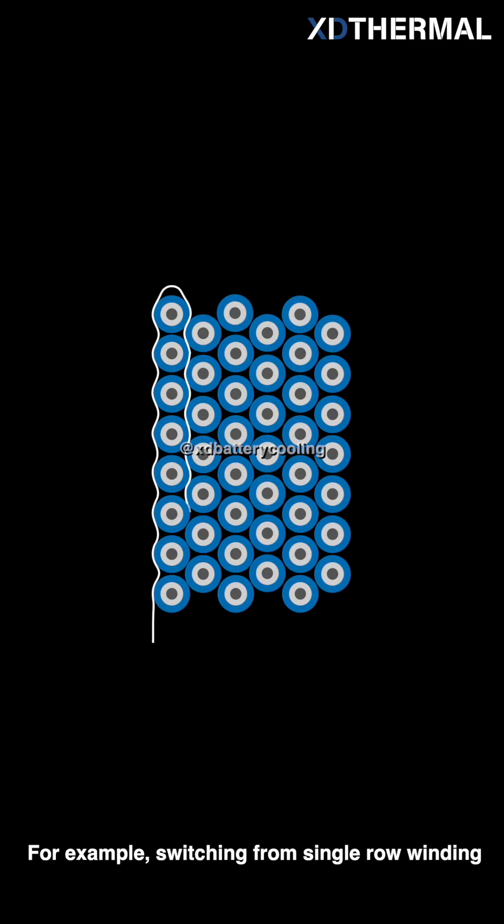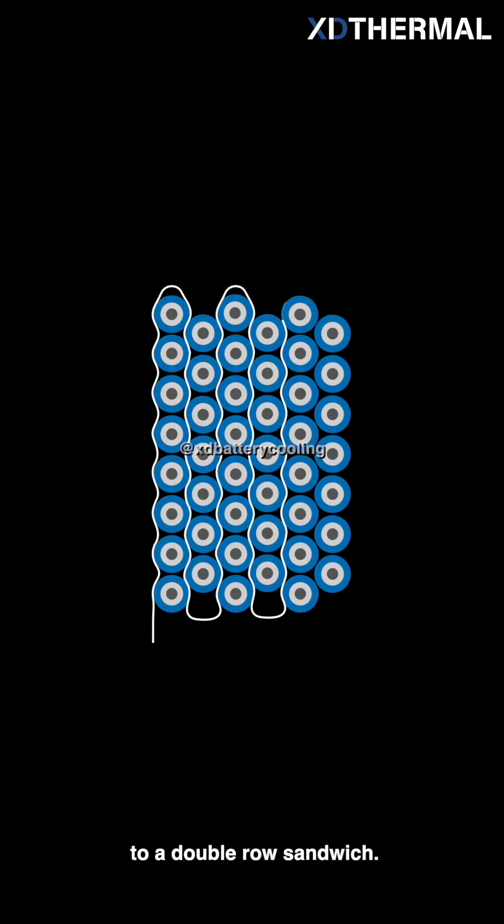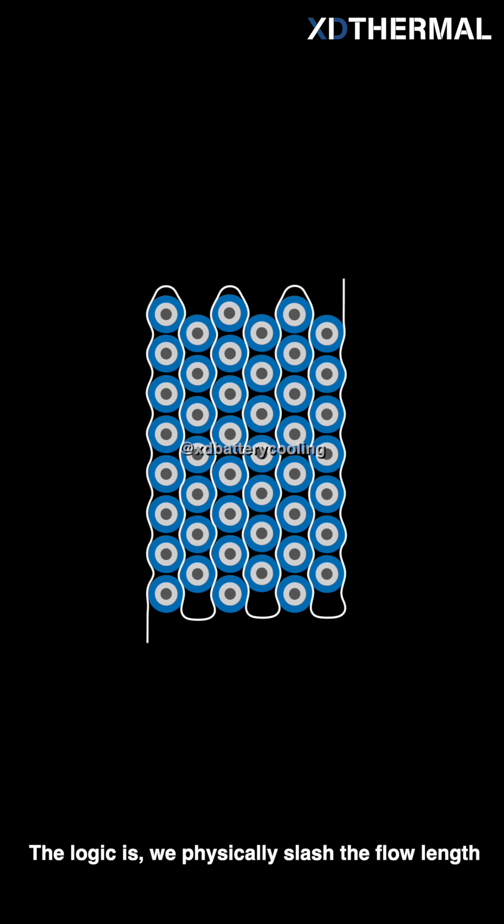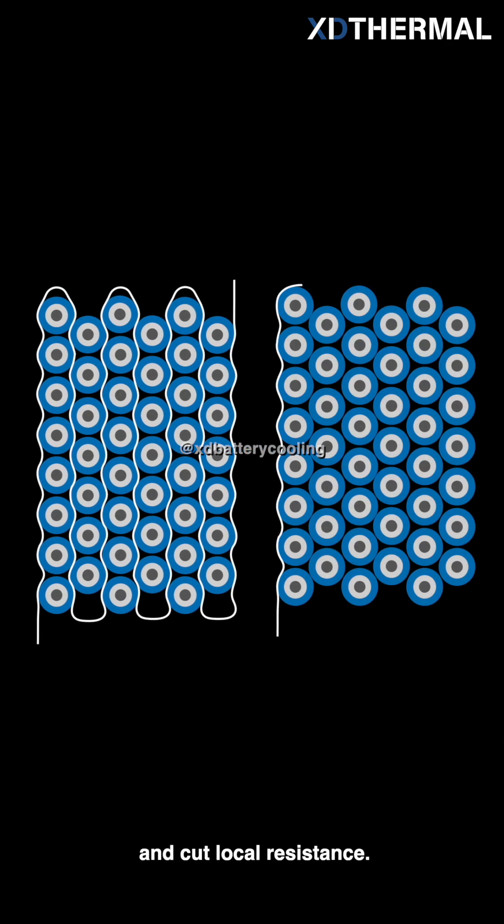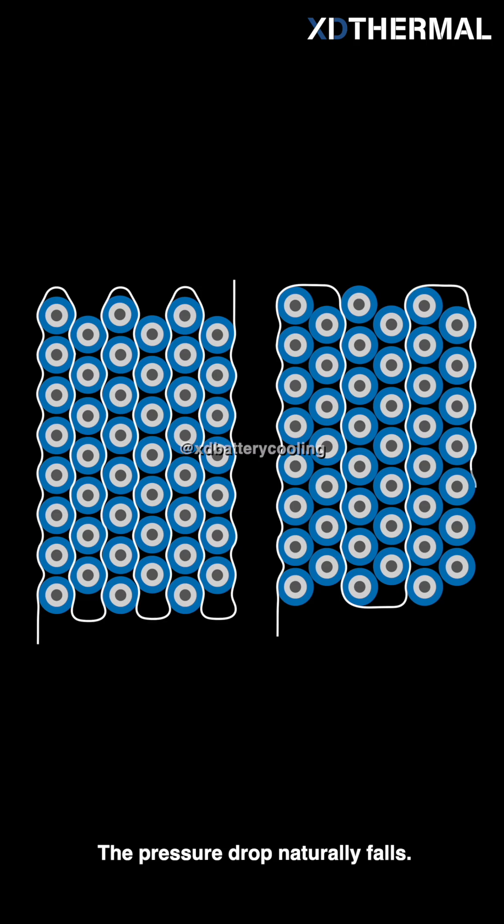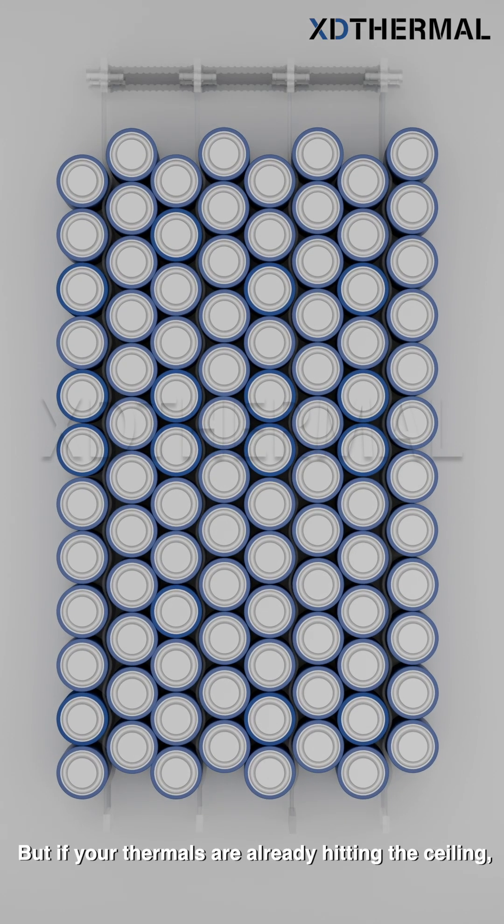For example, switching from single row winding to a double row sandwich. The logic is, we physically slash the flow length and cut local resistance. The pressure drop naturally falls. But if your thermals are already hitting the ceiling,